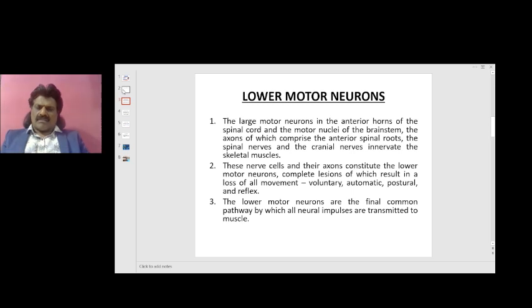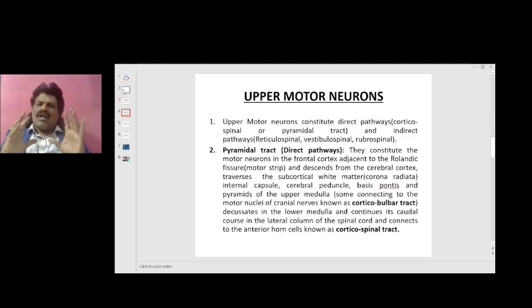Now let's talk about upper motor neurons. Upper motor neurons constitute the direct pathways, that is the corticospinal tract or pyramidal tract, and the indirect pathways, that is the reticulospinal, vestibulospinal, and rubrospinal pathways.